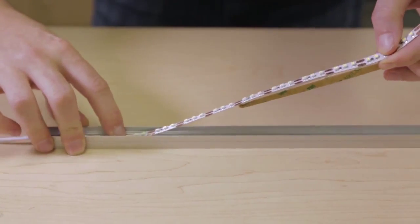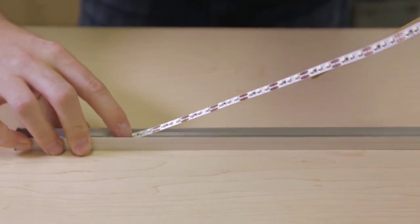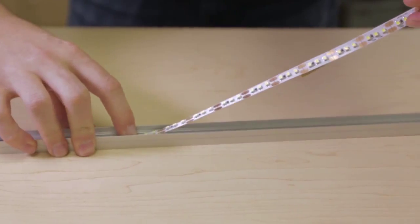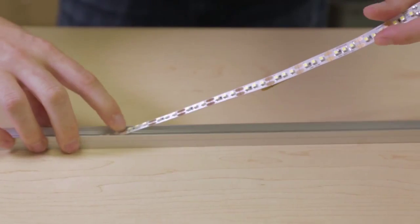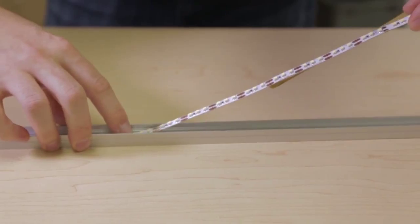Adhere the flex tape to the extrusion channel by holding the flex tape with one hand and pressing down every copper contact point with your other hand, keeping the flex tape as straight as possible.